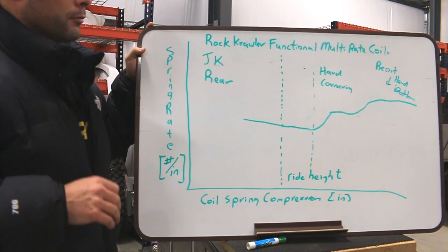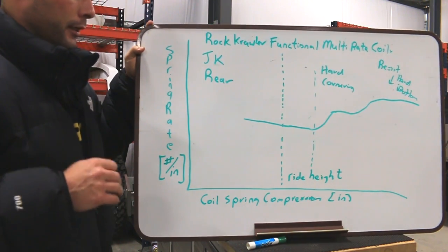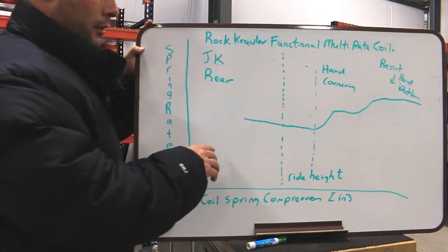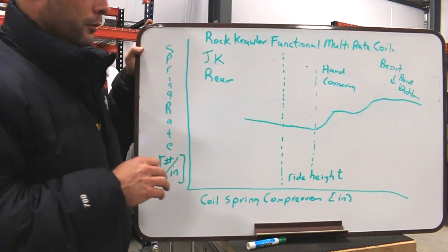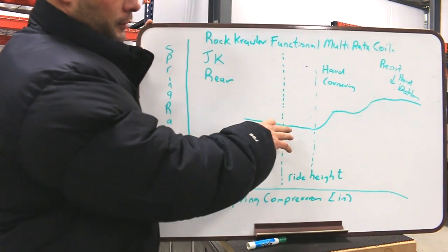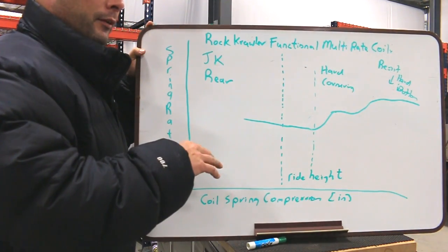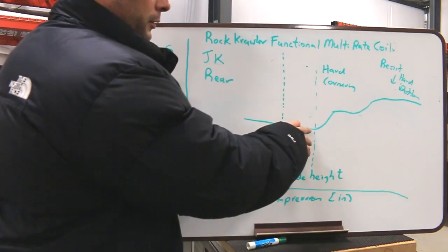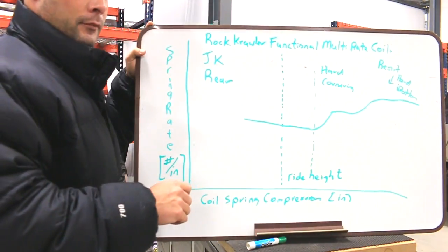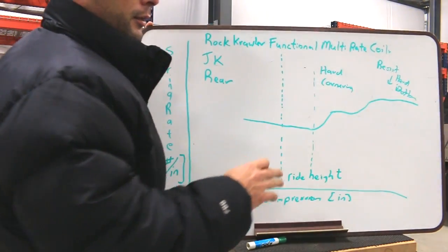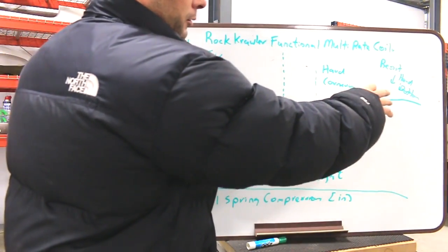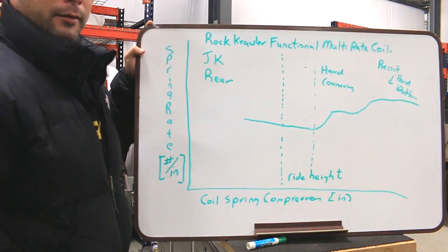Here is the example of the RockCrawler functional multi-rate coil for the JK rears. Again, spring rate versus coil spring compression. This coil is very different from all of our other multi-rate coils. We start off with a very smooth and soft linear rate. Where we typically find vehicles being pushed into hard cornering, we start to have a smooth transition to a slightly firmer rate, then continue on to a third transition that is nice and smooth to an extremely firm rate to resist hard bottoming.